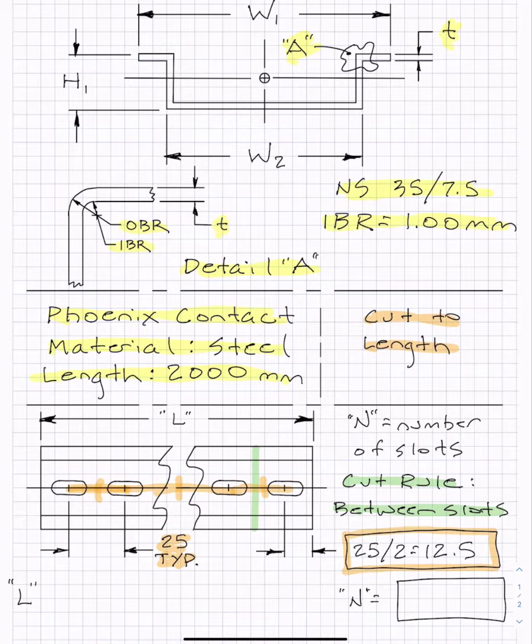So we know that the equation for L is going to be N minus one. In this case, four slots minus one is three. So N minus one times 25 will get us from here to here. And then we need to add to that to get L. We need to add a 12 and a half on the left end and a 12 and a half on the right end.